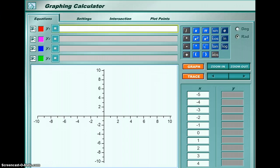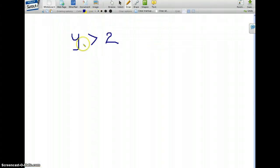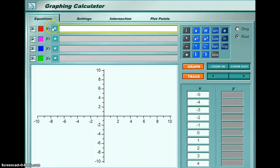So if I want to graph y greater than 2, I don't need to type this y in the graphing calculator because it's already there. That's the y1 you see here. Now while you have four y's, it means you can graph four.